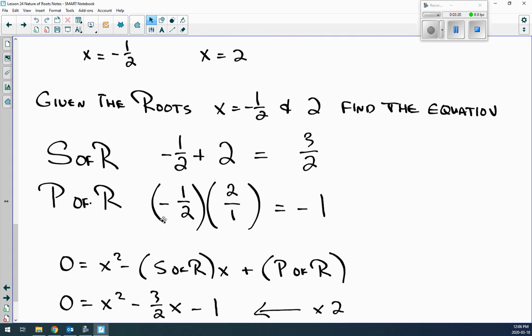negative 1/2 and 2. Well, we can find the sum and the product of the roots, and it's just like what it is. Sum means take them and add them together. Product means take them and multiply them. So, negative 1/2 plus 2 is 3 over 2. Product, you multiply those together, you get negative 1.